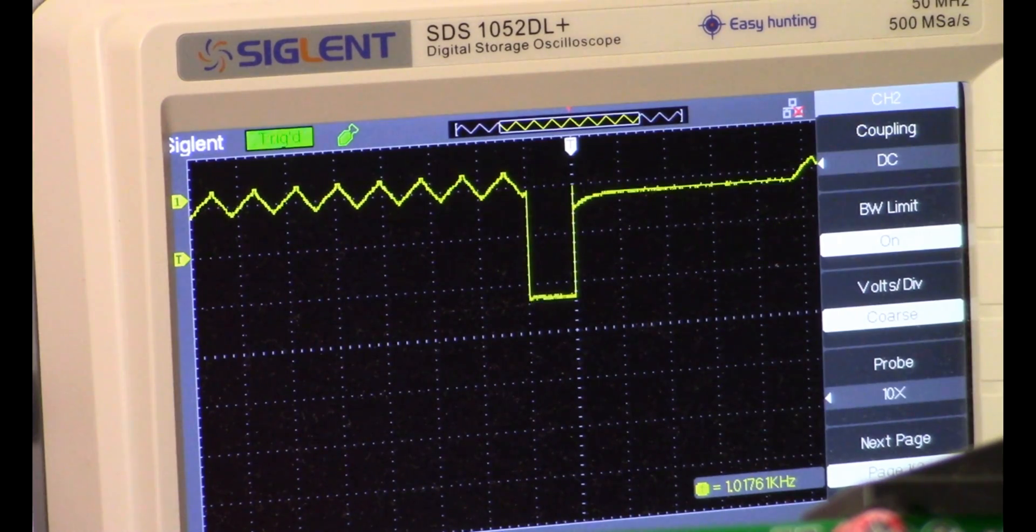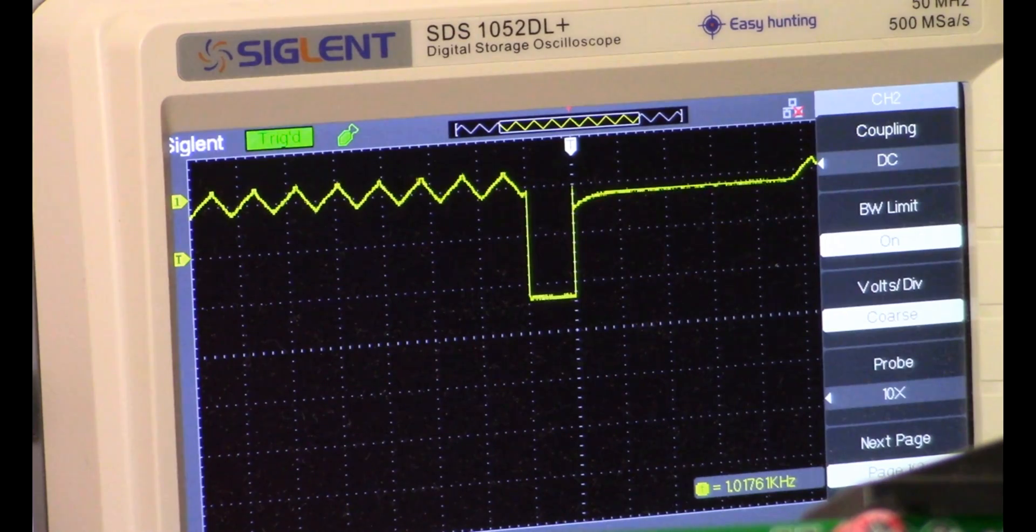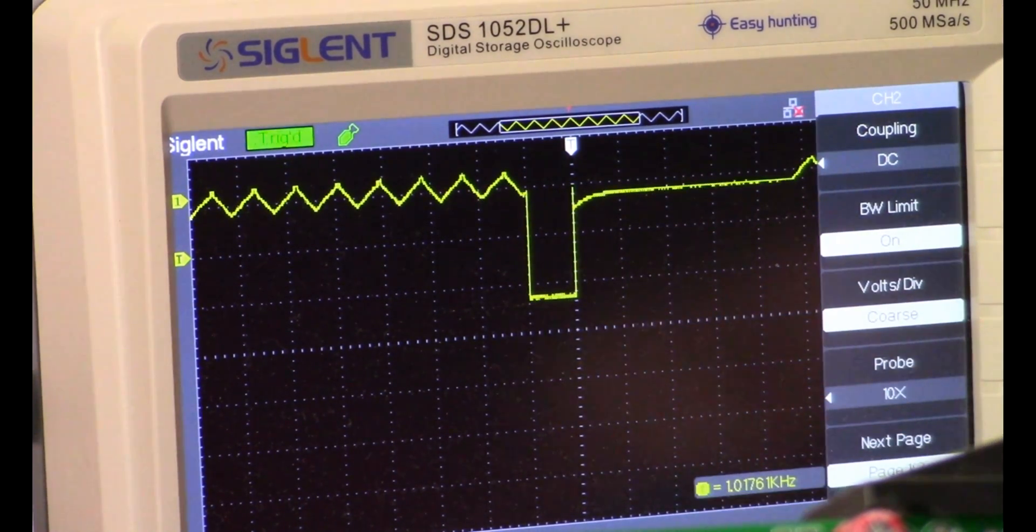So what you see on the screen right now is the main pulse width. We have it set, I think you can see down here at the bottom of the screen, it is just about 50 microseconds and we are running at just over one kilohertz.